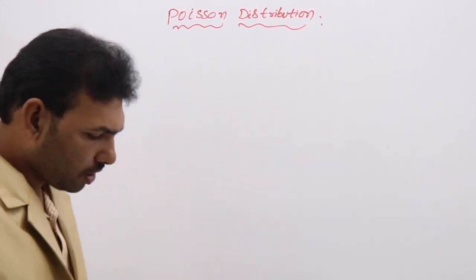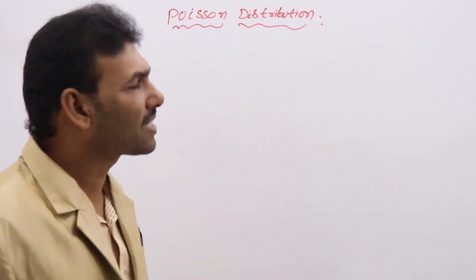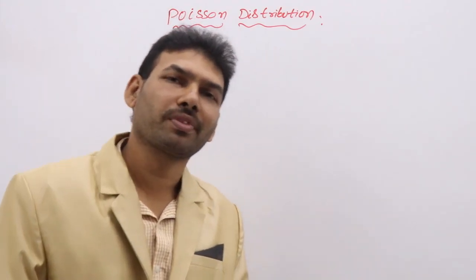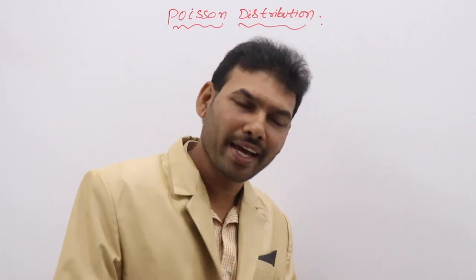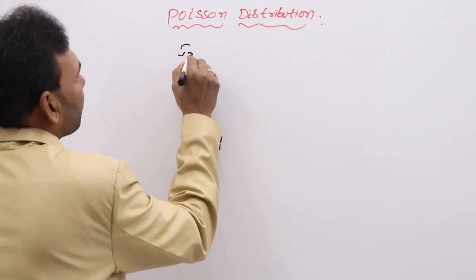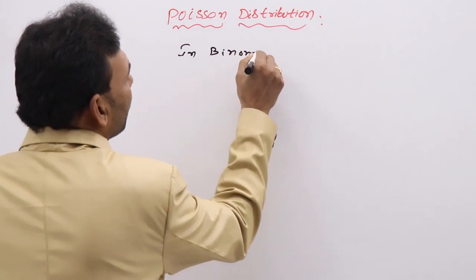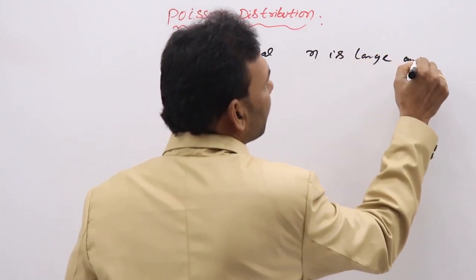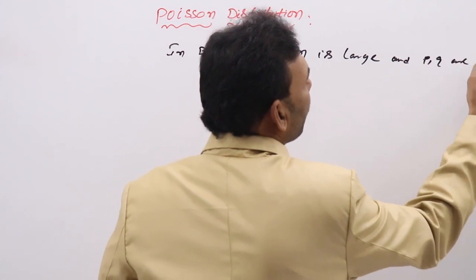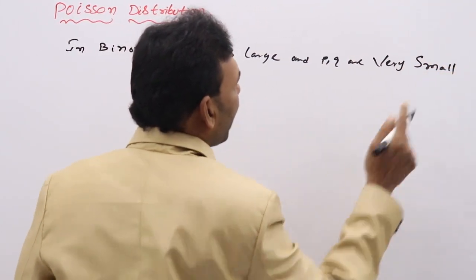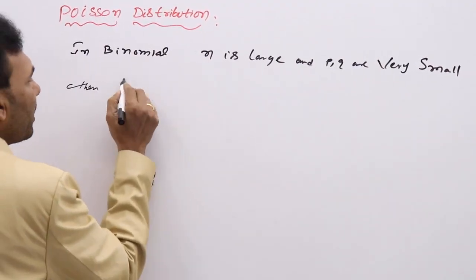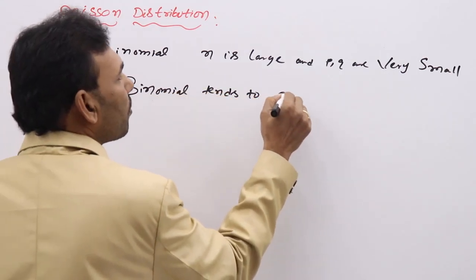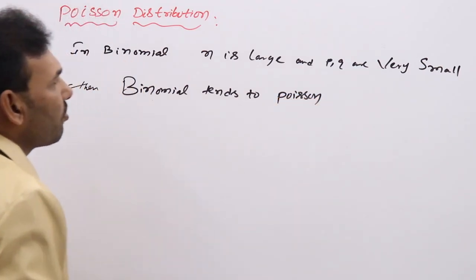Poisson distribution. This is also a discrete distribution, and it is a special case of binomial distribution. A Poisson distribution is a special case where in binomial distribution, if n is large and p and q are very small, then binomial tends to Poisson. Binomial tends to Poisson distribution. This is a limiting case of binomial distribution simply.